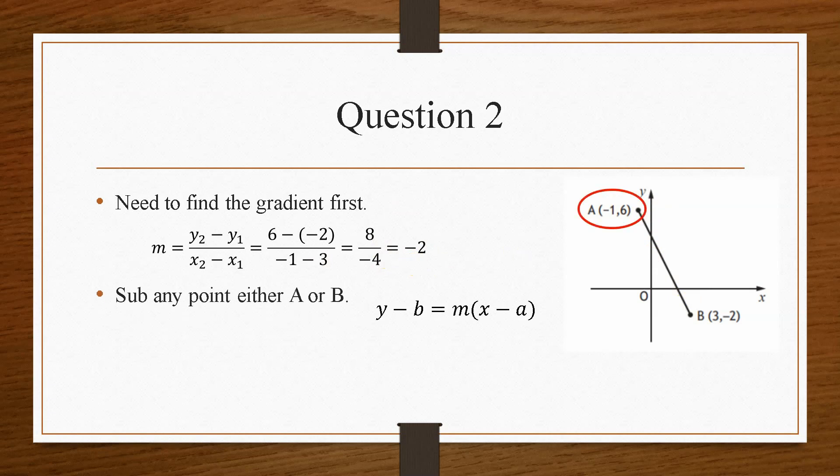So then we can then choose either A or B, it doesn't matter, and we substitute in the values of small b and small a. Now small a is the x-coordinate, and small b is the y-coordinate. So we end up with something that looks like this.